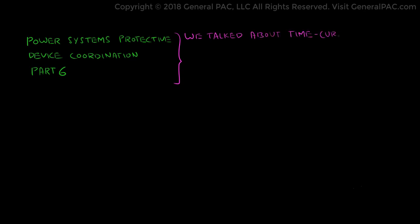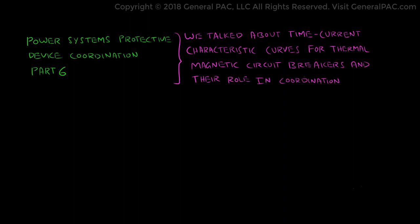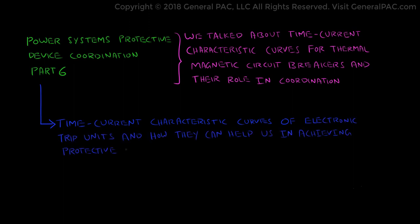In Part 5, we talked about the time-current characteristic curves for thermal magnetic circuit breakers and their role in coordination. In Part 6, we will be discussing the TCC curves of electronic trip units and how they can help us in achieving protective coordination.